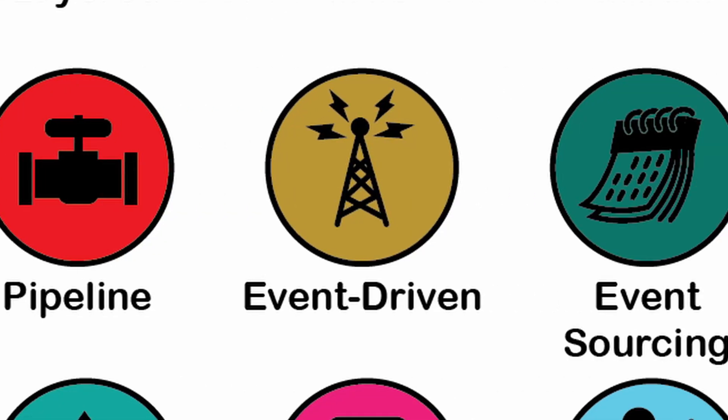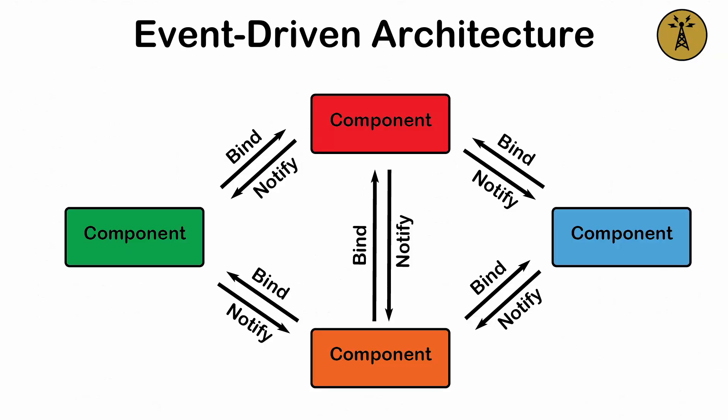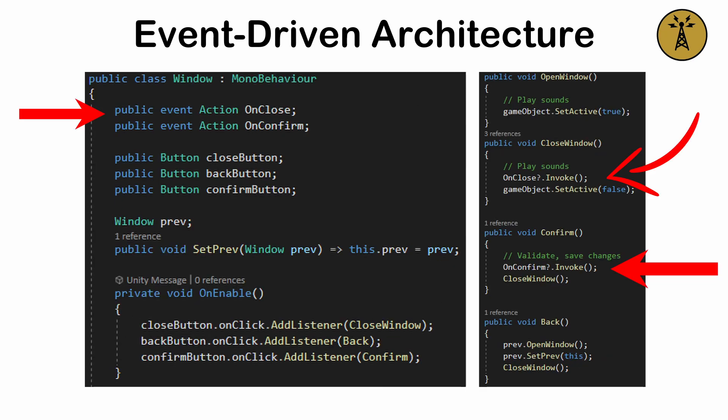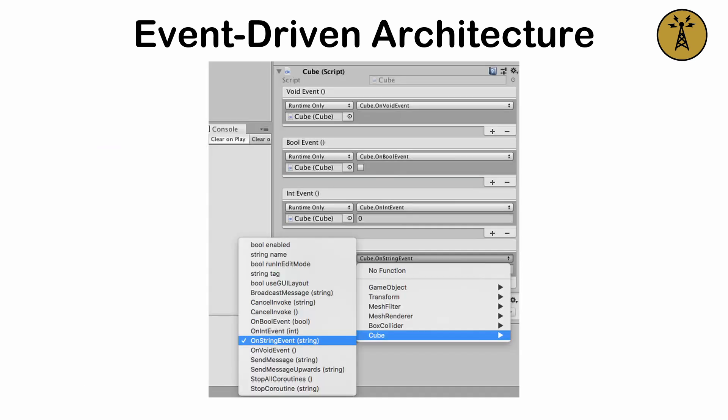Event-driven architecture. A form of organization that relies on the use of remote communication between components. Events, delegates, and observers are leveraged heavily. Highly decoupled and modular, it's useful for asynchronous systems. As with other event-driven systems, debugging can be difficult due to indirect communication.